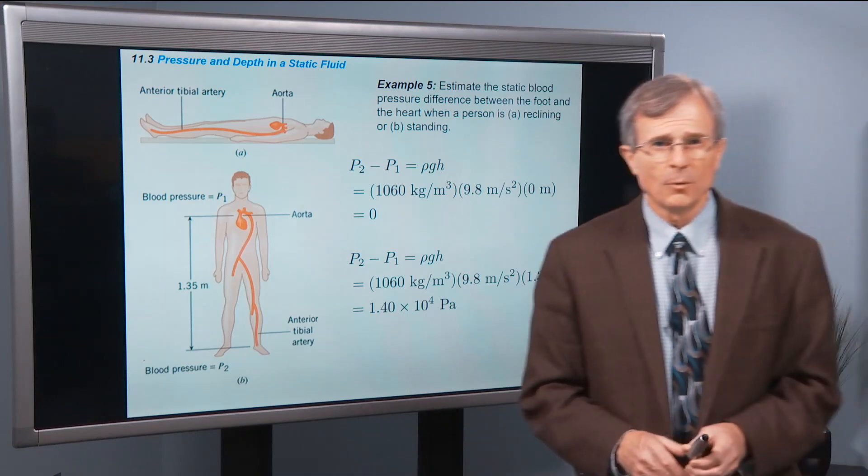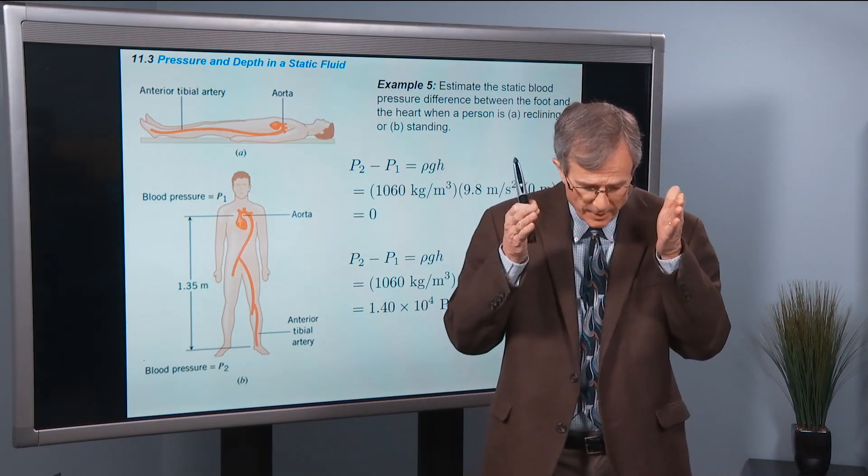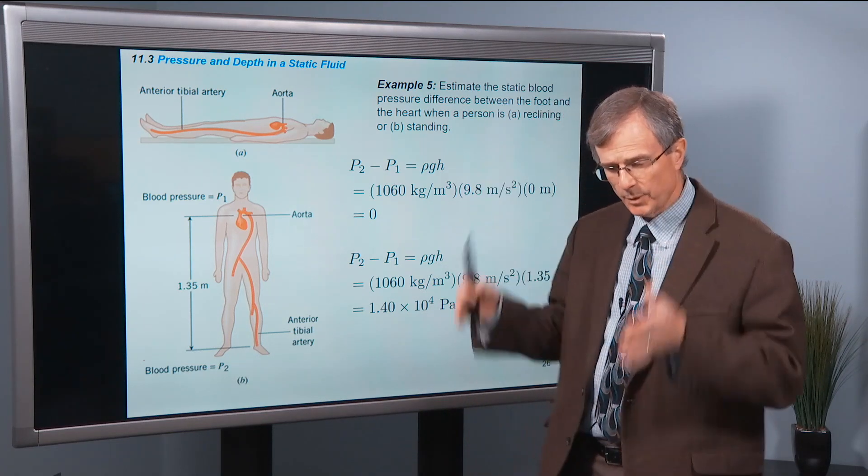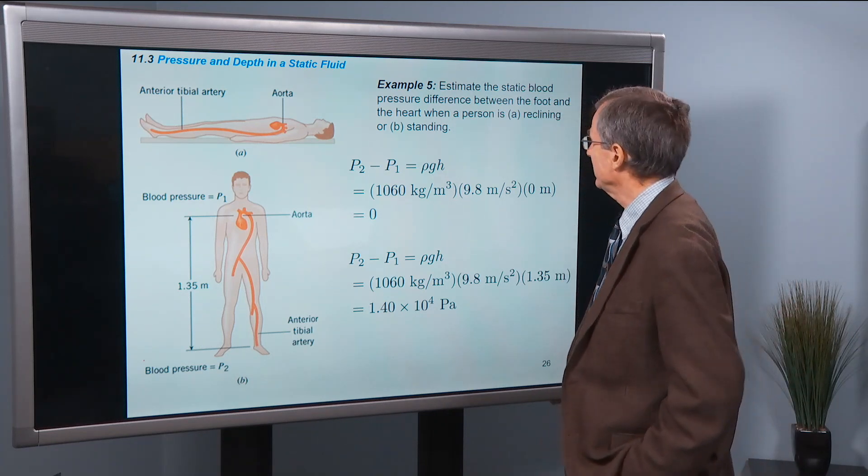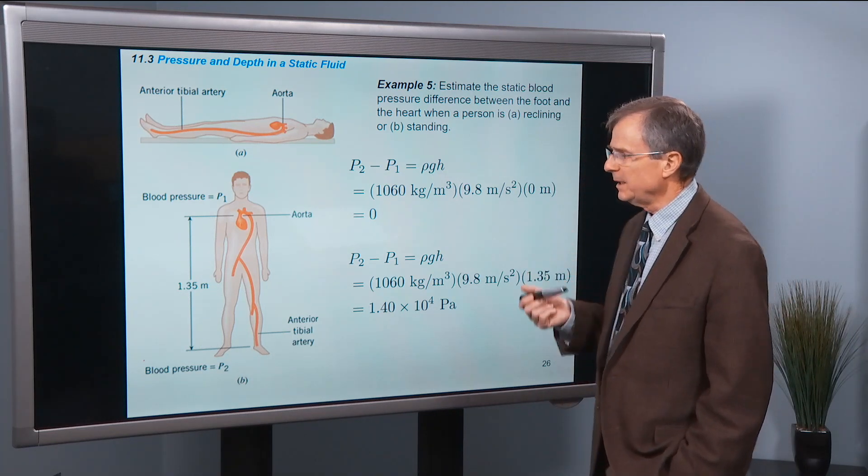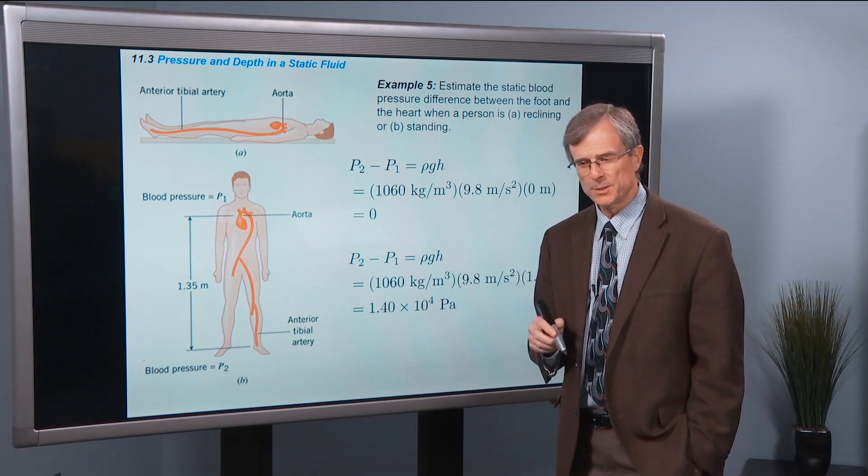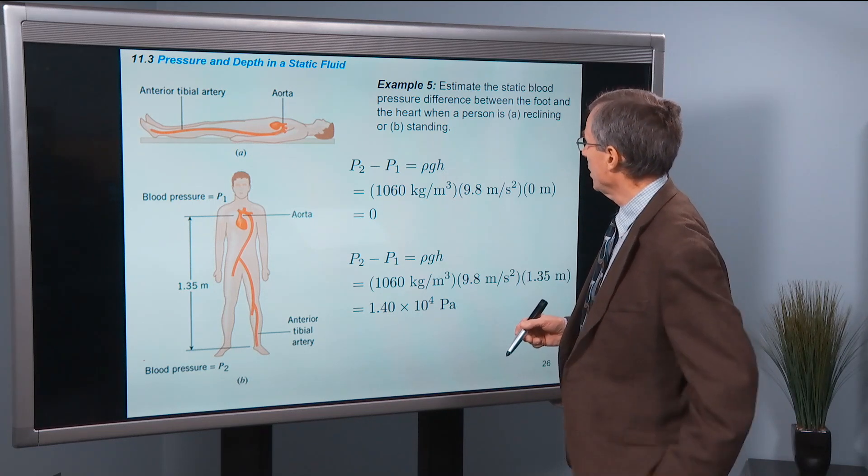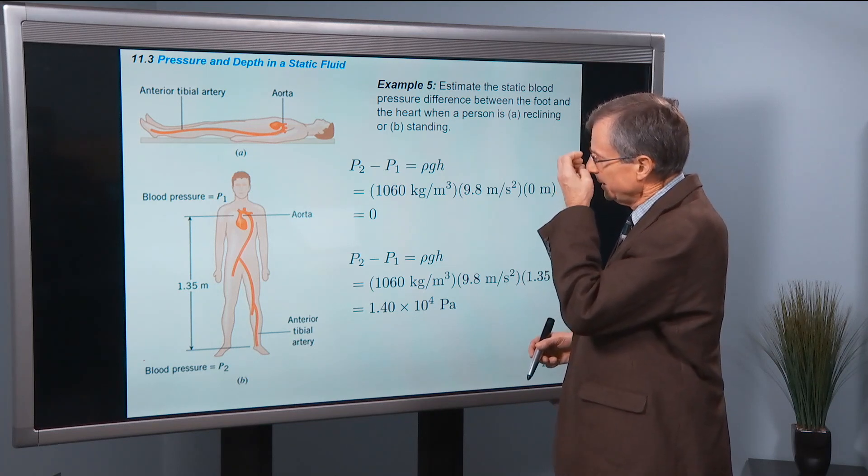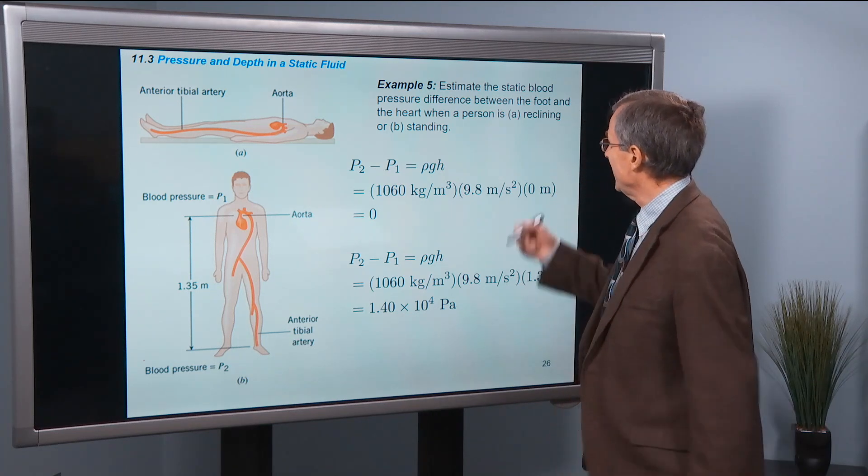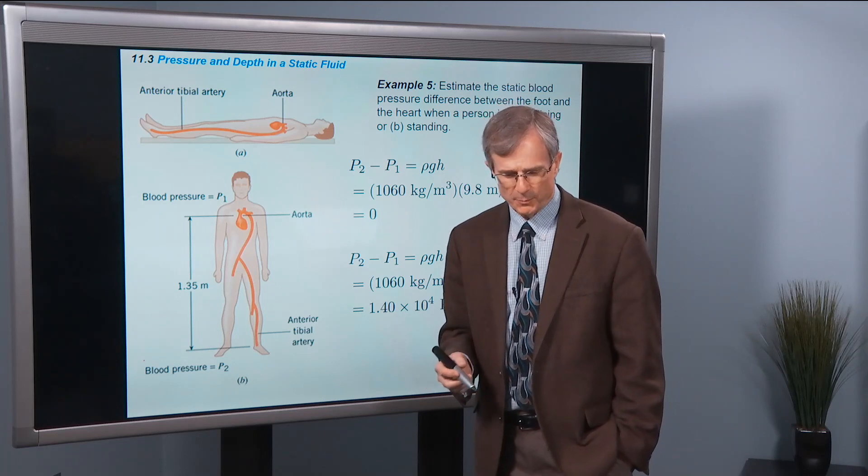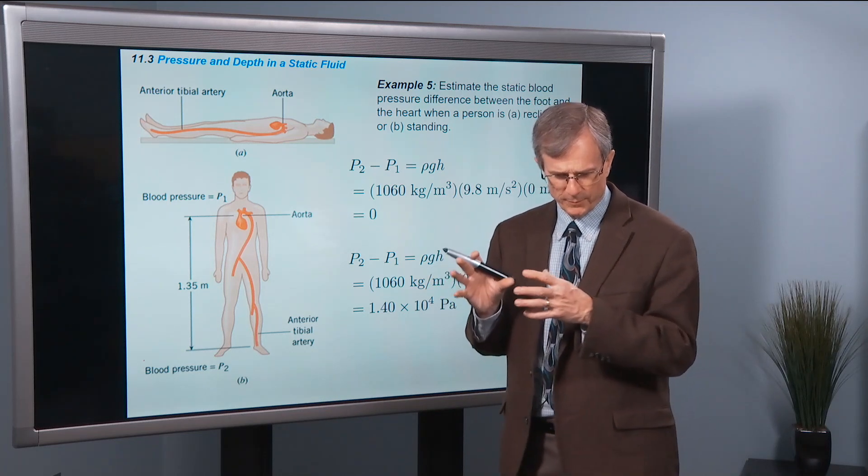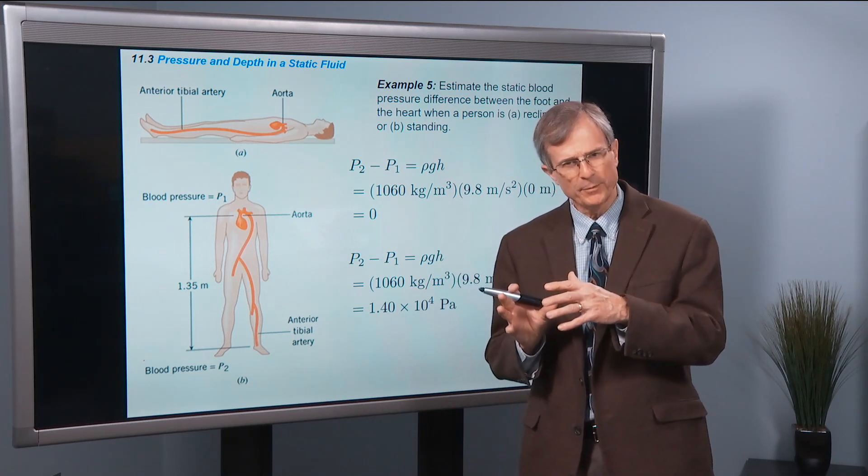So you might be asking, what about the human body? Isn't it a column of water? And the answer is, yeah, it sure is. We have blood throughout our body. Let's take a look at the static blood pressure. Static meaning with blood that's not moving. So this is for a person that's just died. Difference between the foot and the heart when a person is reclining or standing. Now the actual dynamic blood pressure will be a little bit different from this, but this would be what would happen between beats of the heart when the blood gets pushed and slows down a little bit and then is waiting for the next beat of the heart.